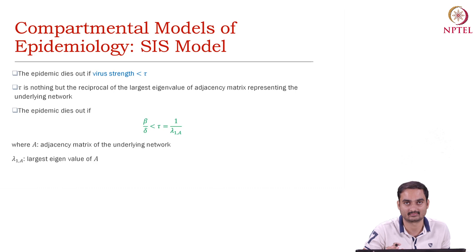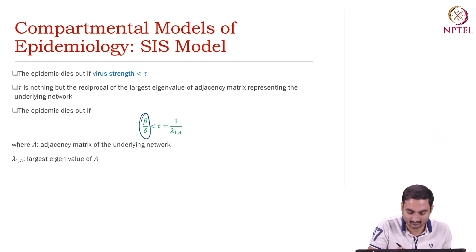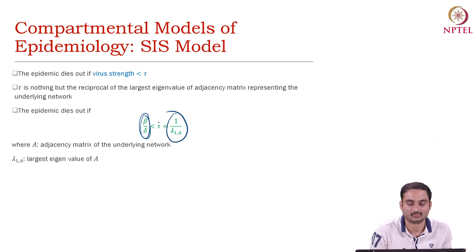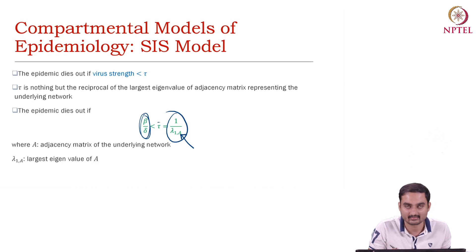It turns out that there is a nice relation between the graph adjacency matrix and this strength. It turns out that beta/delta is always less than one divided by lambda₁(A), where lambda₁(A) is the largest eigenvalue of the adjacency matrix A.